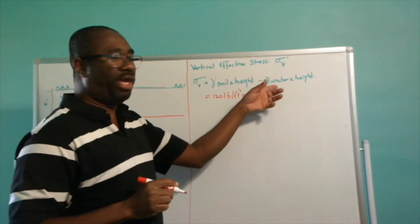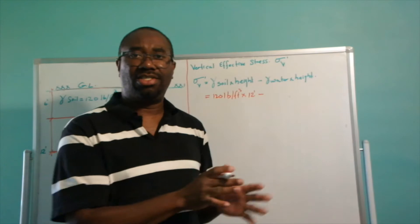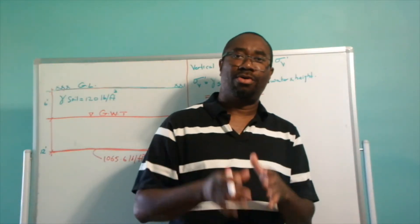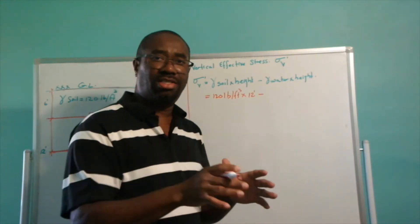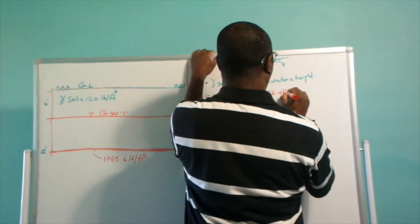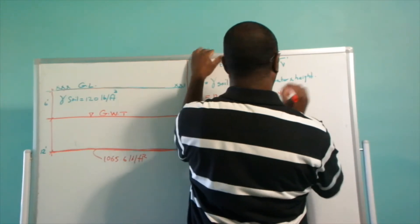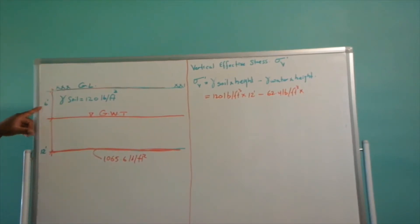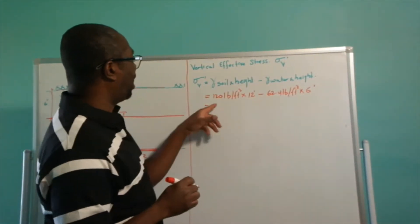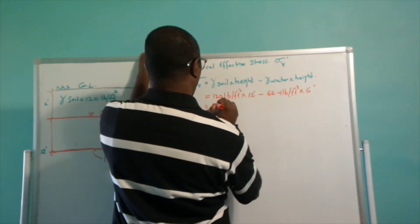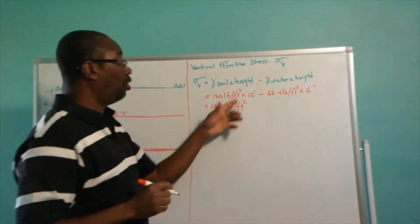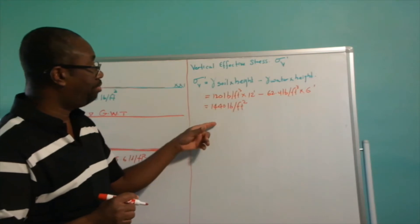Now the weight of water, as I've said previously, is 1000 kilograms per meter cubed or 62.4 pounds per cubic feet. Since we are working in feet, I'm going to use 62.4 pounds per cubic feet for the weight of our water. So it is going to be 62.4 pounds per feet cubed times the height of water, which is 6 feet. We have 12 times 120, which gives us 1440 pounds per feet square. Notice we move from pounds per cubic feet to pounds per feet square.